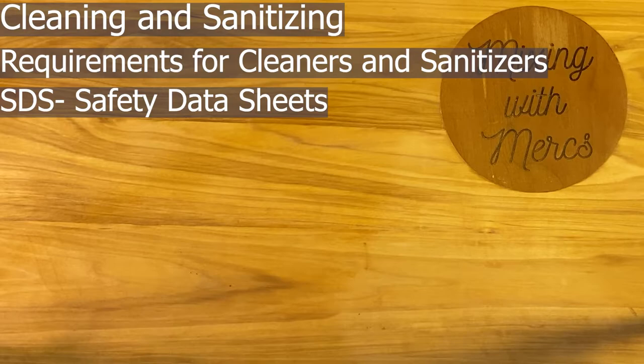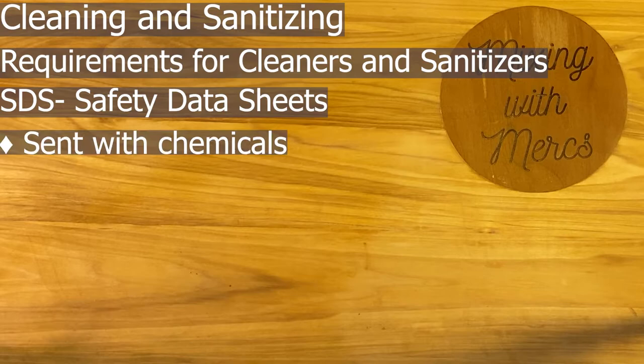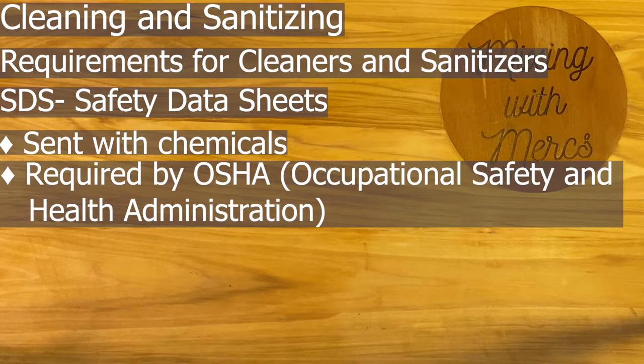For every chemical in your location, you're required to have Safety Data Sheets (SDS), formerly known as MSDS. They're typically sent with the chemicals when they arrive, but even if they're not, you're responsible for having them on hand. They're required by OSHA — the Occupational Safety and Health Administration — whose job is to make sure every workplace is safe. If you don't have them, you can get in trouble, and OSHA can even shut you down if you're not following directions properly.